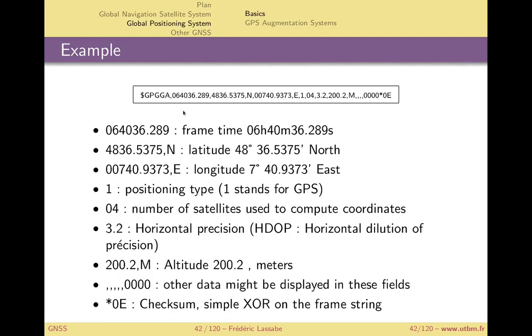The first one is the frame time. So 064036.289 means the frame time is 6 hours, 40 minutes 36.289 seconds. It's the time the frame was sent, the time associated with the locations.